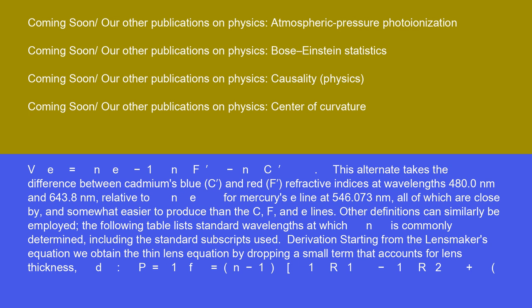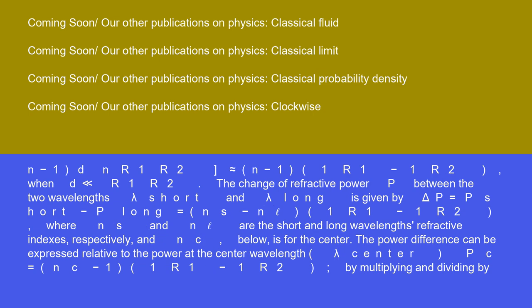Derivation: Starting from the lensmaker's equation, we obtain the thin lens equation by dropping a small term that accounts for lens thickness D. P equals 1/F equals (N minus 1)(1/R1 minus 1/R2) plus (N minus 1)D/(N R1 R2). When D is much smaller than R1 and R2, the change of refractive power P between the two wavelengths lambda SHORT and lambda LONG is given by delta P equals P SHORT minus P LONG equals (NS minus NL)(1/R1 minus 1/R2), where NS and NL are the short and long wavelengths' refractive indices respectively, and NC is for the center.